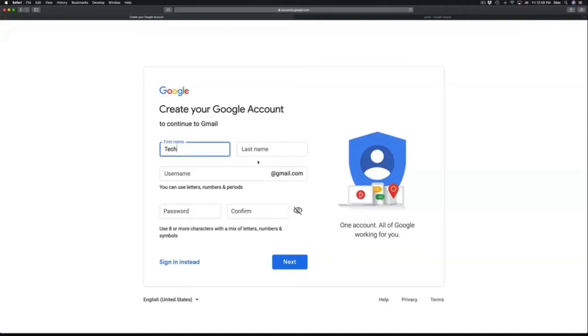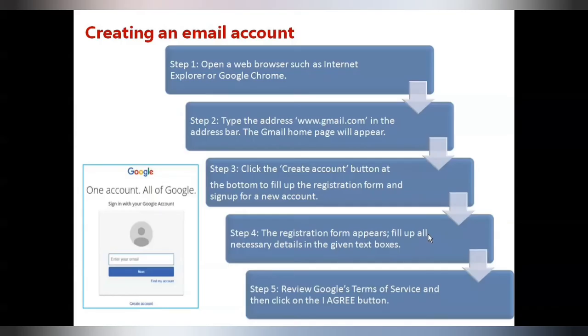The registration form appears. Fill up all of the necessary details in the given text box. Review the Google terms and service and then click on I Agree button. Then when you open, you will log in into your email box. Once you open the account and give all the details, it will check if you are below 13 years of age. Google will not allow you to create an email account. In that case, you may need to take the help of your parent or teacher to create the account for you. Once an email account is created, you can log in anytime using the username and password.